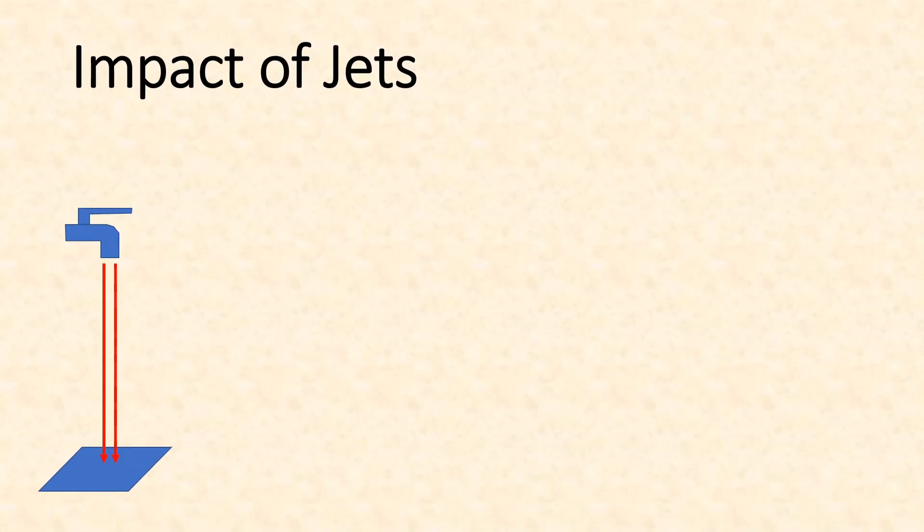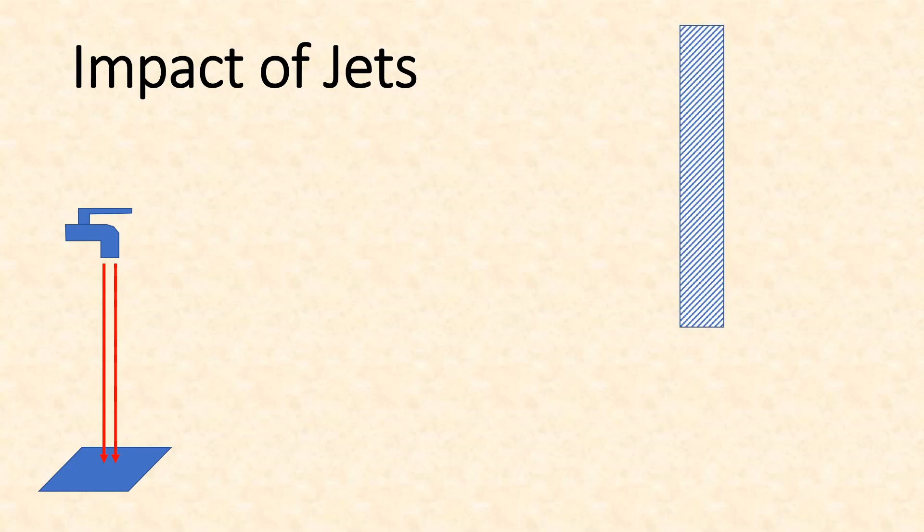Then comes the next topic which is impact of jets. When you open a tap, water falls on the ground or the floor, so the floor experiences some kind of force. What will be this force? Sometimes it's not important but in some cases the force exerted by a flowing stream or jet of water is important. Let's take a plate and hit it with a jet of water. The jet of water after hitting the plate will get deflected. In this deflection the momentum of water is changing, and whenever momentum changes we can expect some kind of force being exerted on this plate.